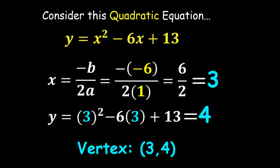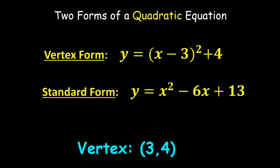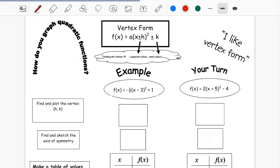One form is called vertex form, which tells you right away that the graph shifted right 3 and up 4, giving vertex (3, 4). The other is called standard form — written differently but still the same equation, same vertex, same parabola. Today we want to dig more deeply into working with vertex form and converting it to standard form to confirm we get the same answer.